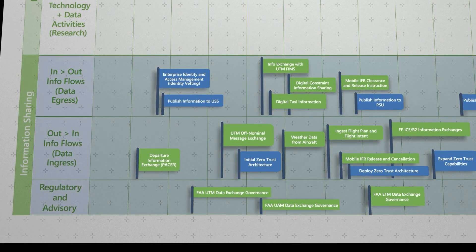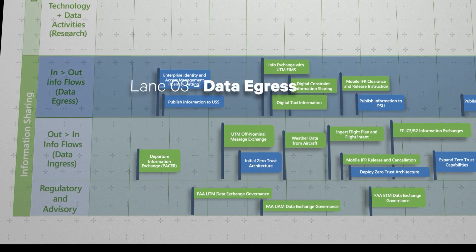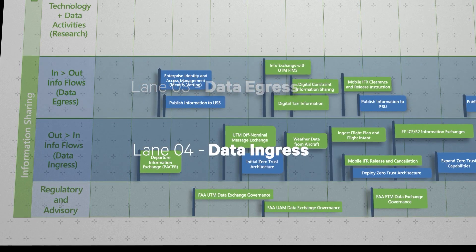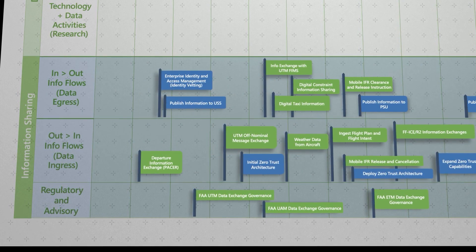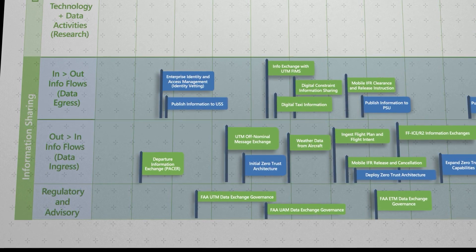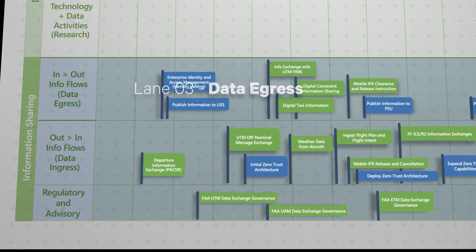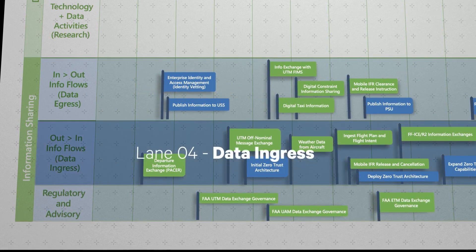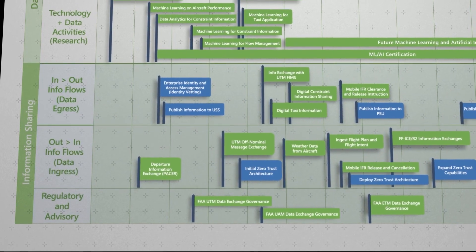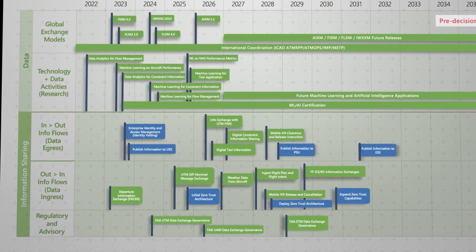The information sharing portion of the landscape captures both in-to-out information sharing flows, or data egress, and out-to-in information sharing flows, or data ingress. The NAS currently exchanges information with a variety of systems and actors, but these exchanges will be expanded greatly under Infocentric NAS. The data egress section contains areas that will change the way information is shared from the NAS, as well as the content that is shared. The data ingress portion contains items that will bring new information into the NAS and the technological enablers required to make them happen. Across both, data is kept secure and protected by having proper security mechanisms in place.